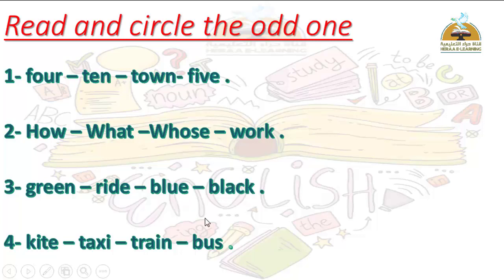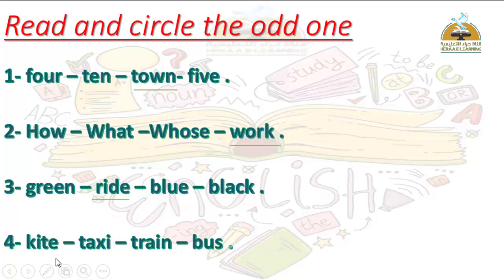Read and circle the odd one out. Number one: four, ten, town, five — all are numbers except 'town.' Number two: how, what, whose, work — all are question words except 'work.' Number three: green, right, blue, black — all are colors except 'right.' Number four: kite, taxi, train, bus — taxi, train, and bus are all means of transport — except 'kite.'